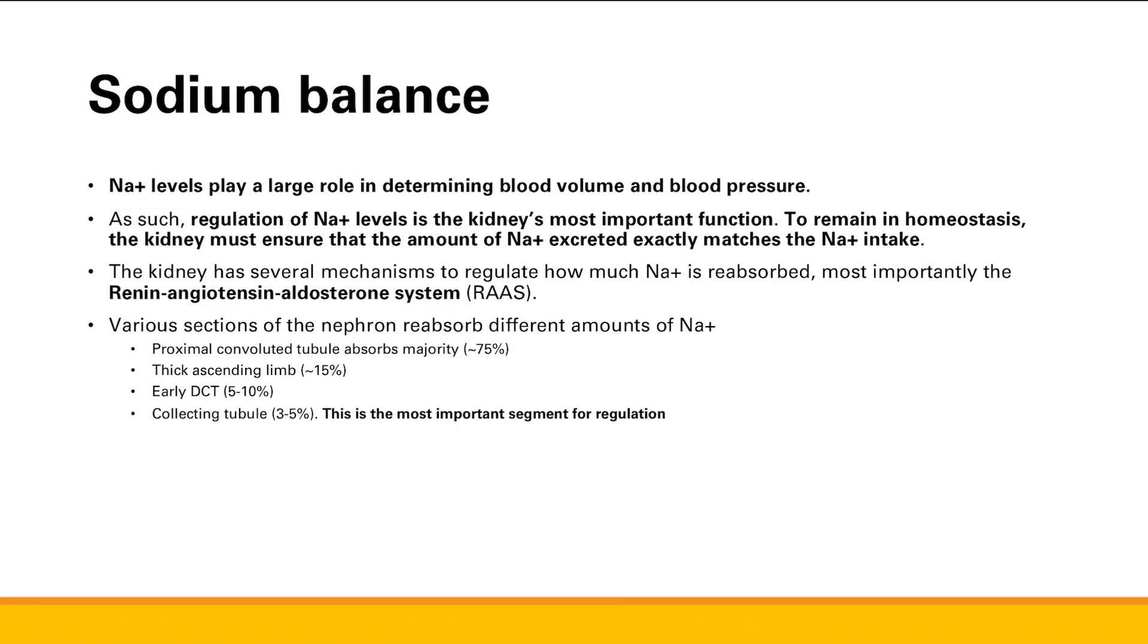Finally, various sections of our nephron are going to reabsorb different amounts of sodium. I mean different amounts of the total sodium that we originally filtered through the Bowman's capsule. Proximal convoluted tubule absorbs the majority, 75%. Thick ascending limb, loop of Henle, 15%. Early distal convoluted tubule, 5% to 10%. And eventually, collecting tubule, 3% to 5%.